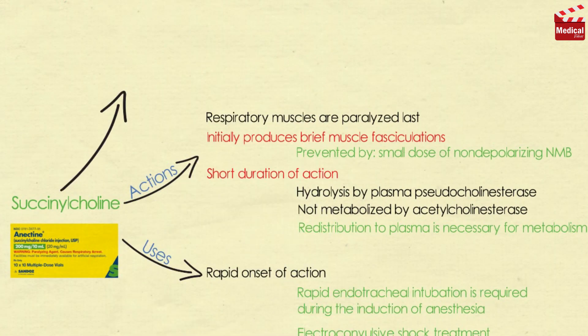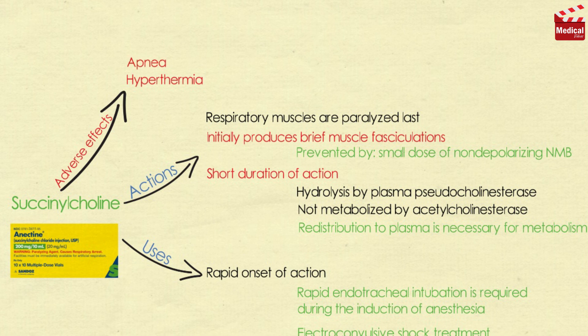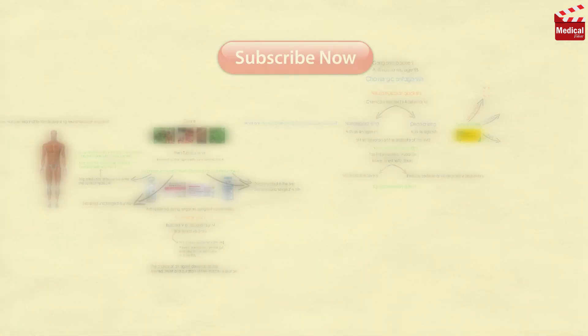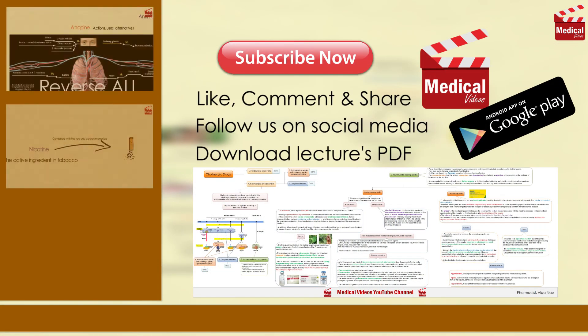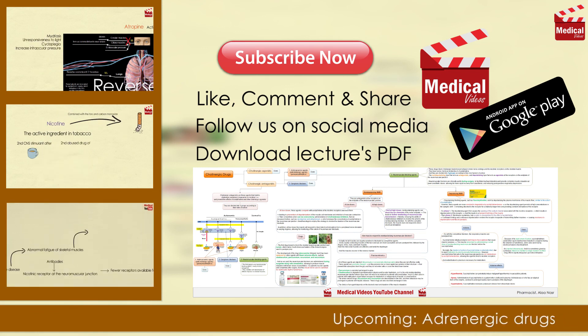It has some adverse effects. Hyperthermia: Succinylcholine can potentially induce malignant hyperthermia in susceptible patients. Apnea: Administration of succinylcholine to a patient who is deficient in plasma cholinesterase or who has an atypical form of the enzyme can lead to prolonged apnea due to paralysis of the diaphragm. Hyperkalemia: Succinylcholine increases potassium release from intracellular stores.